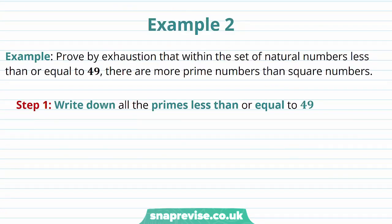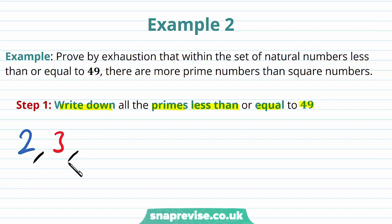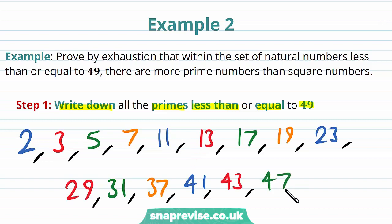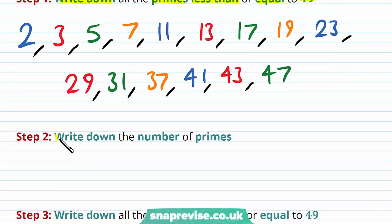Our second example asks us to prove by exhaustion that within the set of natural numbers less than or equal to 49, there are more prime numbers than square numbers. Our first step is to write down all the primes less than or equal to 49. The relevant primes are: 2, 3, 5, 7, 11, 13, 17, 19, 23, 29, 31, 37, 41, 43, and 47. Counting these up, there are 15 primes in this set.